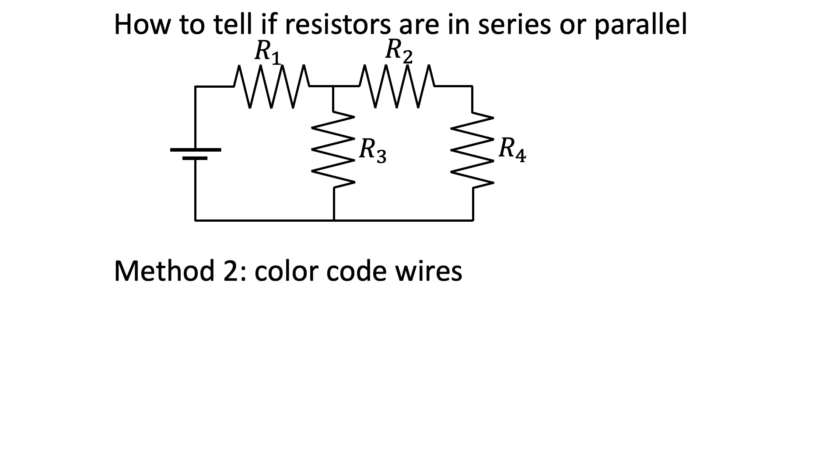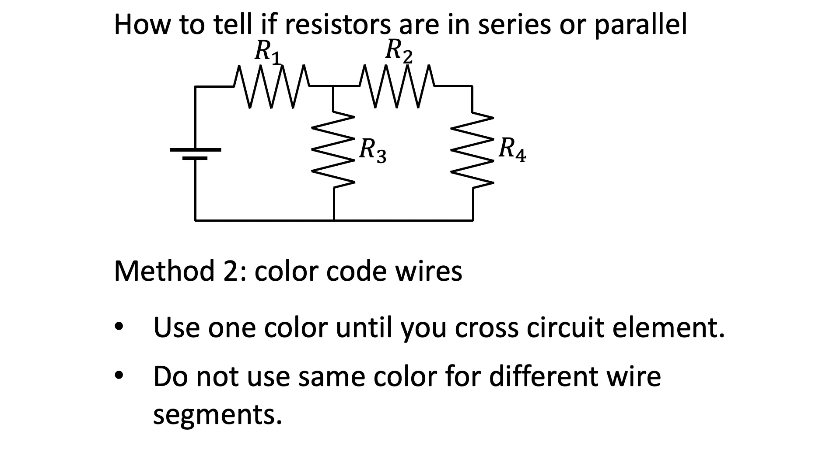Method 2 is more systematic and requires you to use pens or pencils with different colors. We use one color to trace wire segments until we hit a circuit element, such as a resistor or battery.